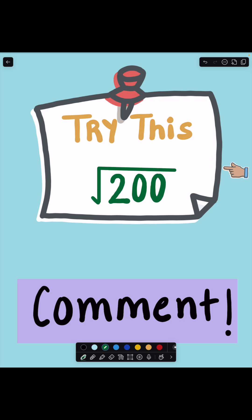Try this with square root of 200 in the comments below. Find the perfect square just below 200, divide and average. I'll verify your answers. And like if this blew your mind and follow for more mind-bending math tricks that actually work.